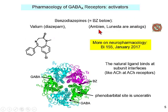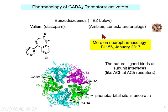There are many allosteric modulators of GABA-A receptors. Some trademarks include Ambien and Lunesta. Because there are various types of GABA-A receptors, some diazepam-like molecules decrease anxiety, others are good sleeping pills, and others have more of a sedative effect. Also, phenobarbital binds to and activates GABA-A receptors, though it's not certain yet where phenobarbital binds.